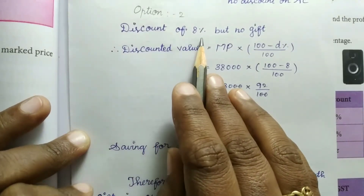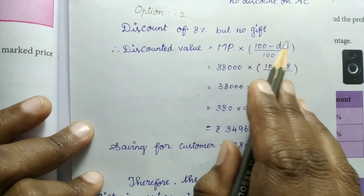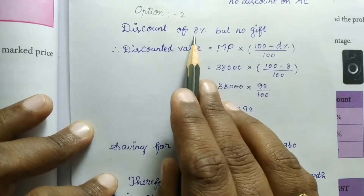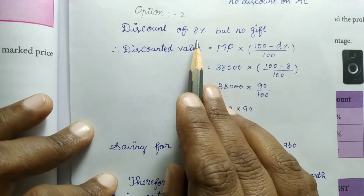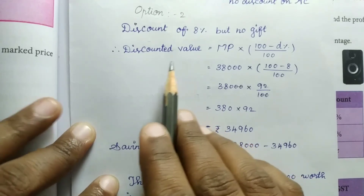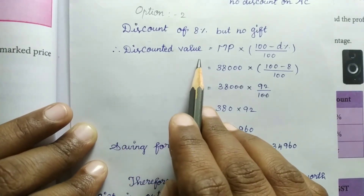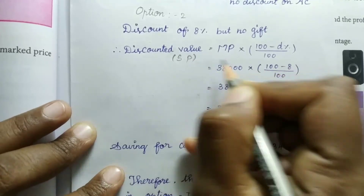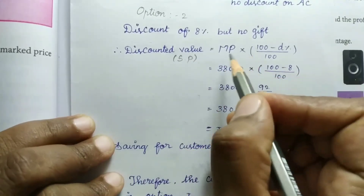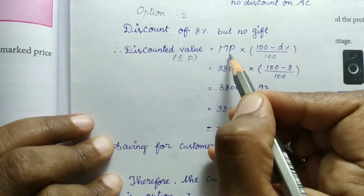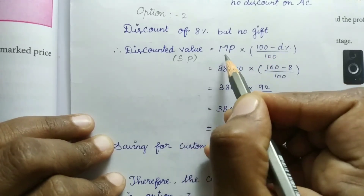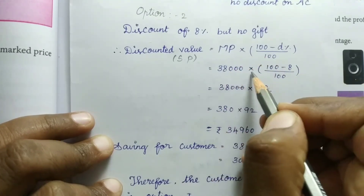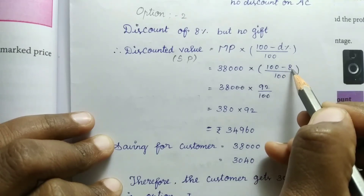For the second option: discount of 8% but no gift. Total market price is Rs. 38,000 with 8% reduced. Using the formula, SP = MP × (100 − D%) ÷ 100, that is 38,000 × (100 − 8) ÷ 100.